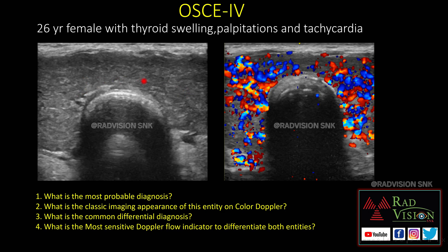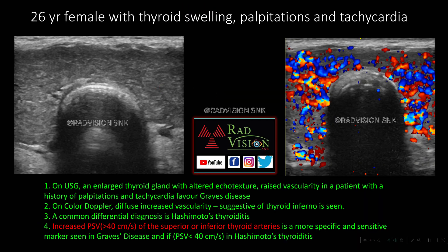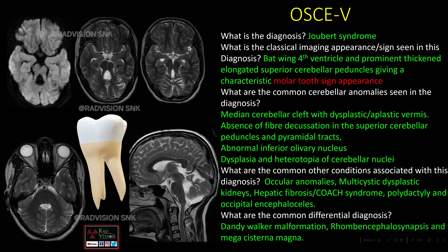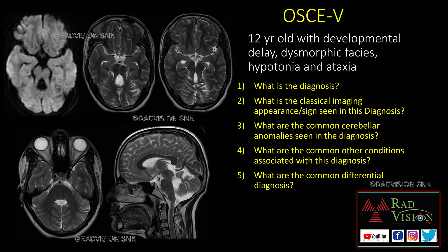Next case — OSCE 4: a 26-year-old female with thyroid swelling, palpitations, and tachycardia. The thyroid is enlarged with predominantly altered echotexture and raised vascularity on color Doppler. This is a classical case of Graves disease. The color Doppler pattern is called 'thyroid inferno.' The common differential is Hashimoto's thyroiditis. The sensitive Doppler indicator is peak systolic velocity (PSV) in the superior or inferior thyroid arteries: PSV greater than 40 cm/s indicates Graves disease; less than 40 cm/s indicates Hashimoto's thyroiditis.